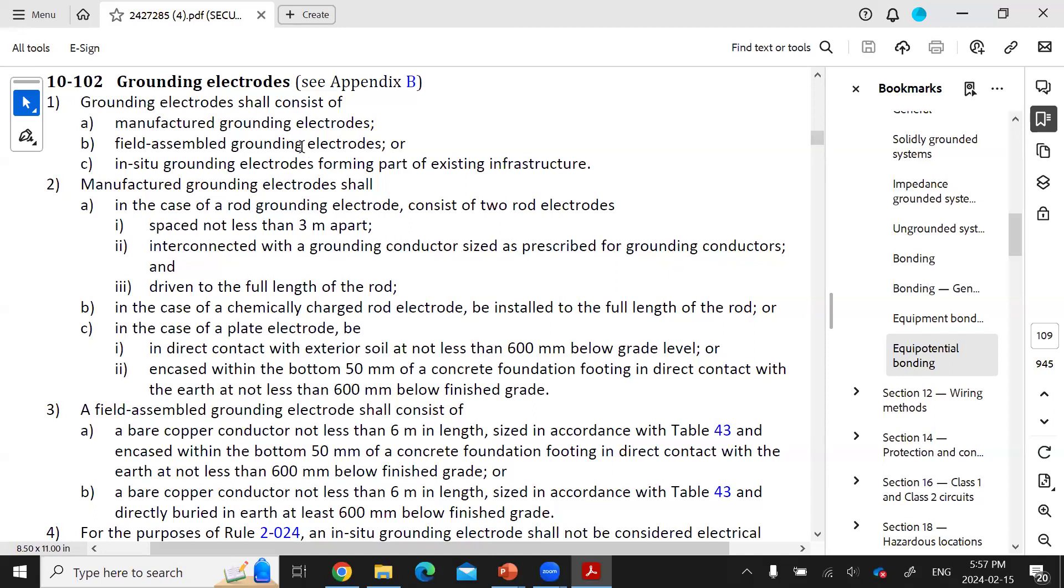Separate Rule 1 recognizes these three types of electrodes. The manufactured ones are usually rods or plates manufactured according to a CSA standard. The field-assembled electrodes are often manufactured on site using readily available materials like bare copper conductors.